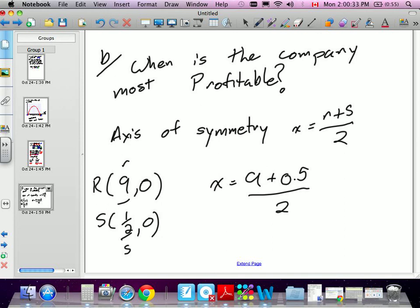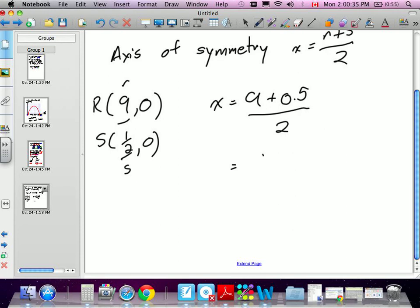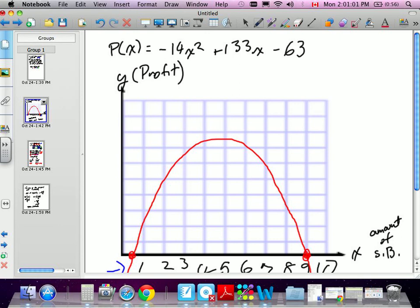We get 9.5 divided by 2, which is 4.75. So in the thousands, what would this mean? 4,750 skateboards. So let's refer this back to our graph. What that means is that 4.75, this is our axis of symmetry, which is roughly here. That's when they're going to make the most profit. When this company sells 4,750 skateboards, that's when they'll make the most profit.